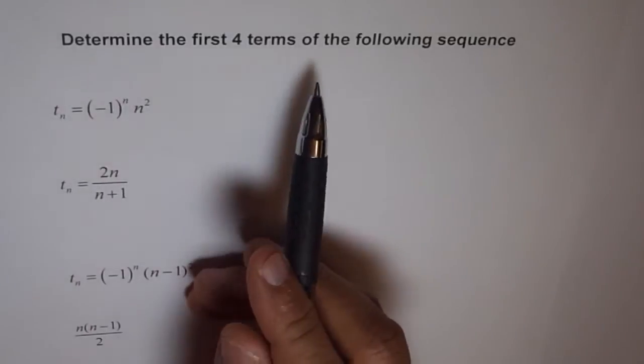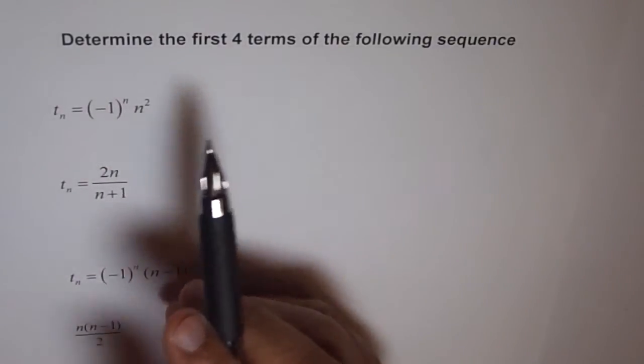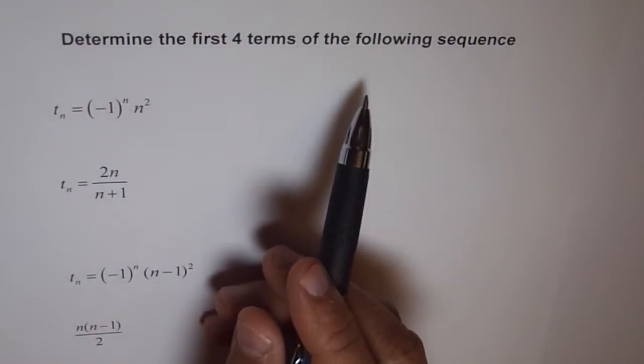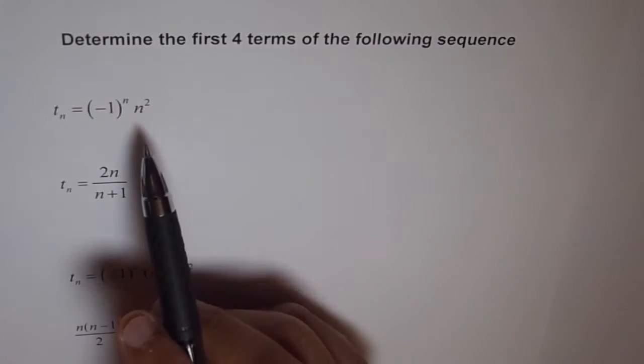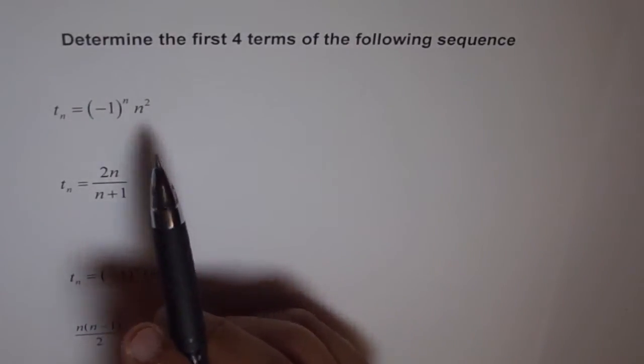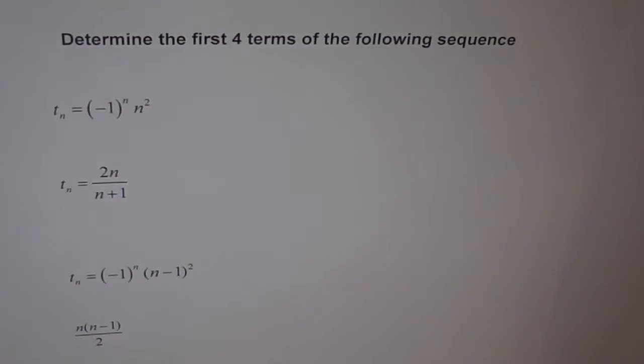Determine first four terms of the following sequence. Whenever we are given a sequence, then the values of n in general are natural numbers. So if it is not specified, we'll assume n belongs to the set of natural numbers.